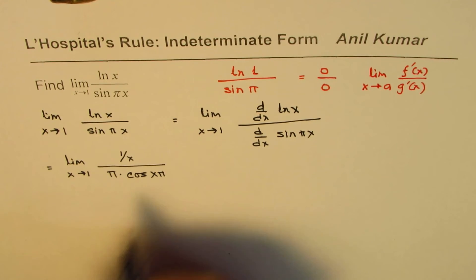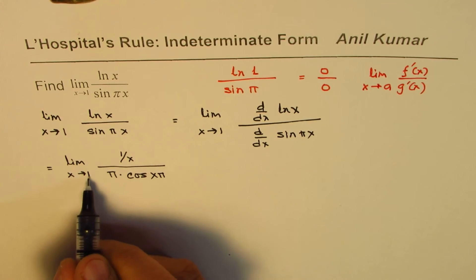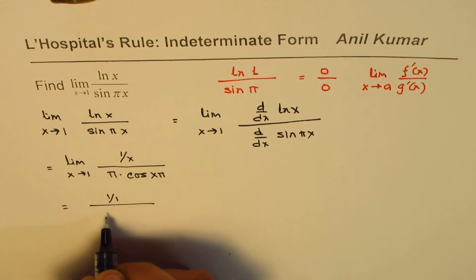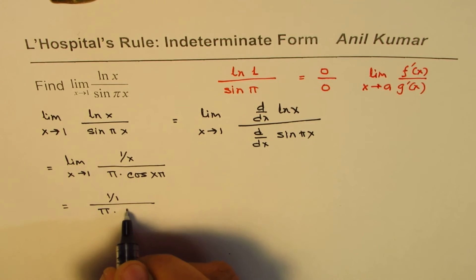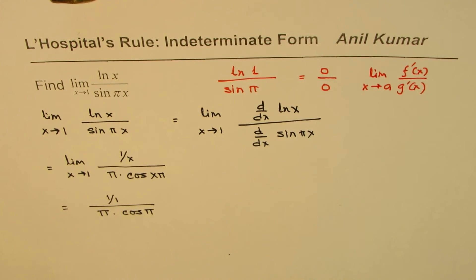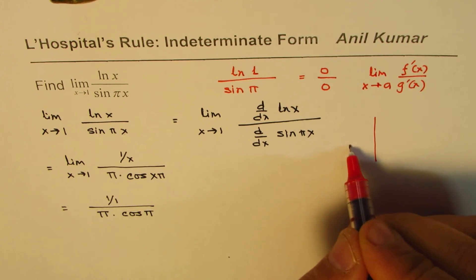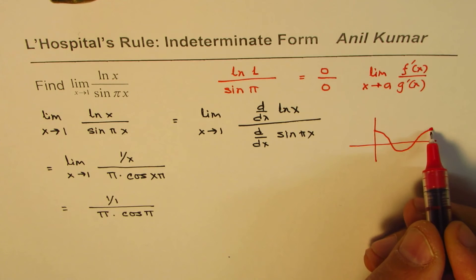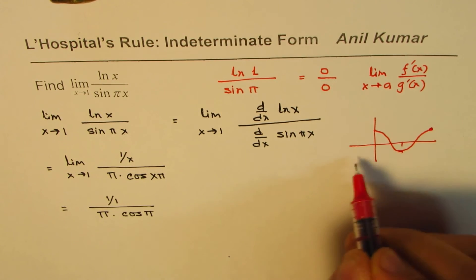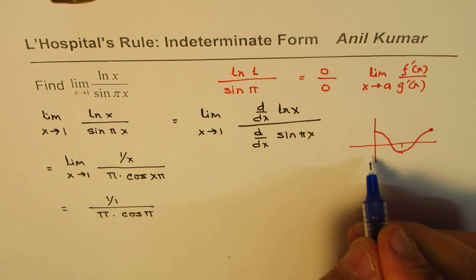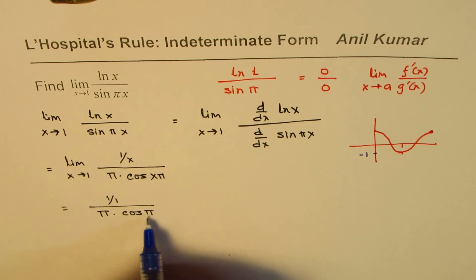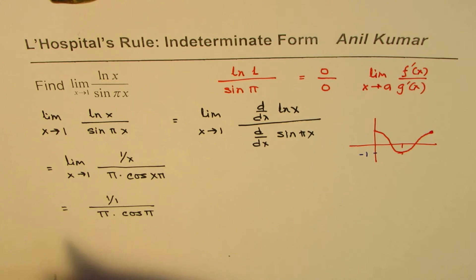If I substitute 1, what do I get? I get 1 over 1 divided by π times cos of π. As you know, the cos function is kind of like this. cos π is minus 1, so we could write cos π as minus 1, and we get